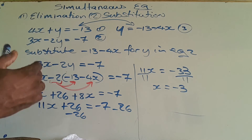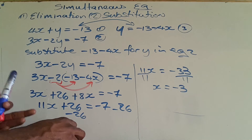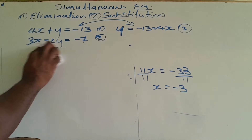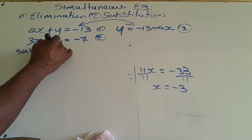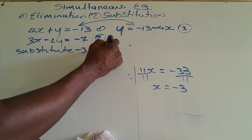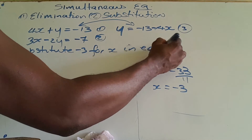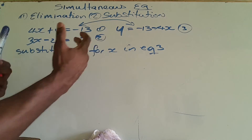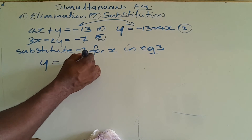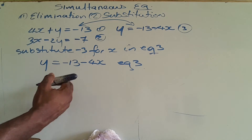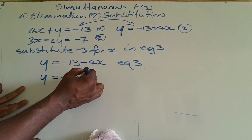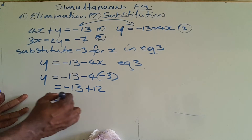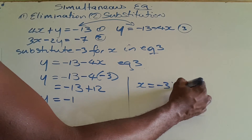So that's one of my responses — x equals negative 3. Now I need to find y. I'm going to substitute negative 3 for x in equation 3, because equation 3 already has y as the subject, so no rearranging is needed. Equation 3: y equals negative 13 minus 4 times negative 3. That gives y equals negative 13 plus 12, so y equals negative 1. My conclusion: x equals negative 3 and y equals negative 1.